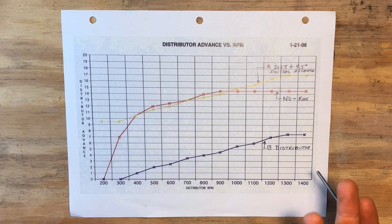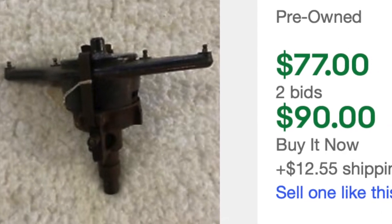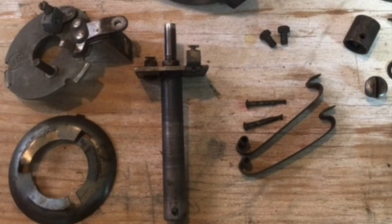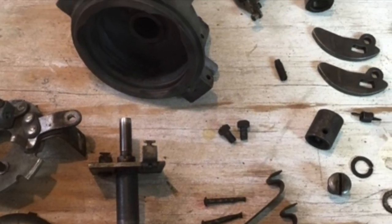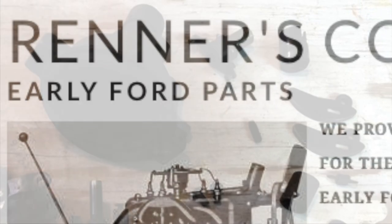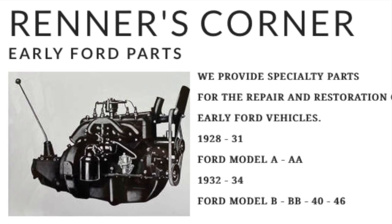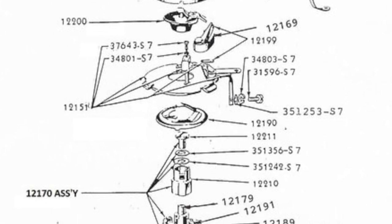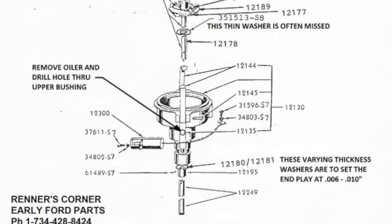So let's talk through how you would get a B distributor in working order. The first thing you need to do is find an old B distributor on eBay or at a swap meet. Here's a picture of the one I got after I had taken it apart. Although this unit was heavily used, it had all the key parts that are difficult to find. I sent this unit off to Dave Renner at Renner's Corner Early Ford Parts. Dave is pretty much the only vendor rebuilding B distributors right now, and he's an extremely nice person — generous with his time, he likes to teach, and his prices are reasonable.